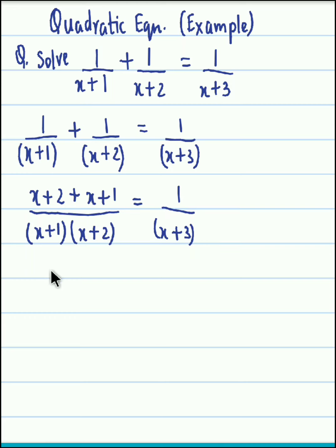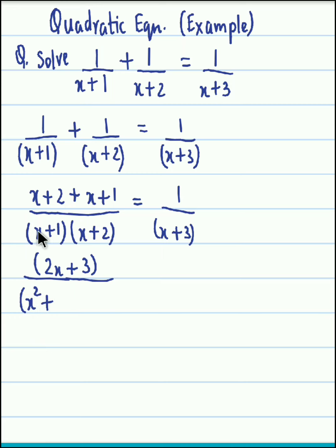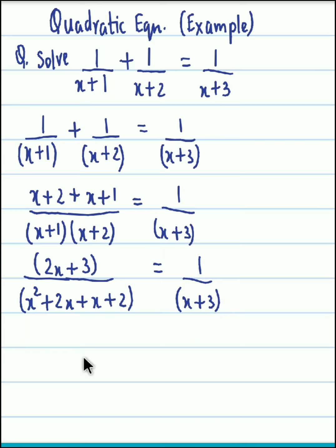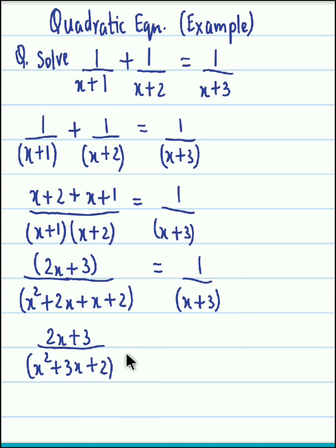Now we add these terms. So we obtain 2x plus 3 in the numerator. Now let us multiply these two brackets in the denominator. So we obtain x squared plus 2x plus x plus 2, giving x squared plus 3x plus 2. On the right hand side we have 1 upon x plus 3. So the left hand side finally gives us 2x plus 3 divided by x squared plus 3x plus 2, equal to 1 upon x plus 3.